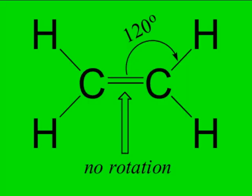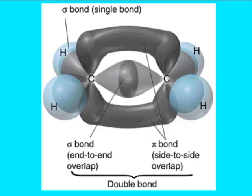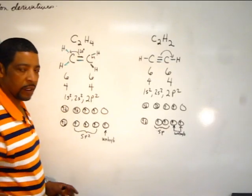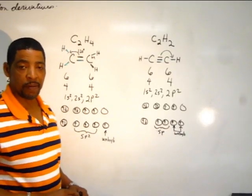The bond angles due to a double bond will be 120 degrees. The double bond consists of a sigma bond and a pi bond, where the pi bond represents the overlap of the unhybridized p orbital in each of the carbon atoms.